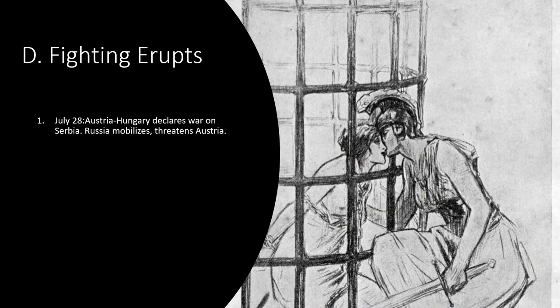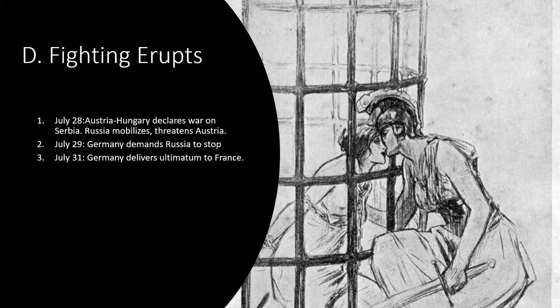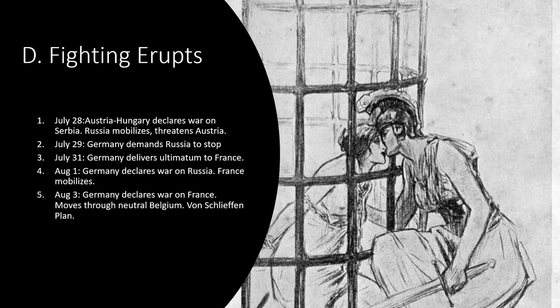The war quickly escalated due to alliances. On July 28, Austria-Hungary declares war on Serbia. Russia mobilizes, threatening Austria. On July 29, Germany demands Russia to stop. On July 31, Germany delivers an ultimatum to France to stop their mobilization. On August 1, Germany declares war on Russia and France continues to mobilize. On August 3, Germany declares war on France and moves through neutral Belgium via the von Schlieffen Plan. On August 4, Great Britain declares war on Germany. It was that quickly that all of Europe was at war — the first time since the Napoleonic Wars that ended in 1815.